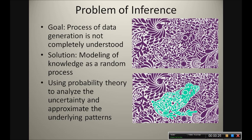Our problem of inference is related to analyzing or understanding usually large amounts of data, and in some cases small amounts of data. The goal is to understand the process of data generation — how any data set is generated. Usually, even though the data can be a deterministic process, the model can be very complicated and the number of parameters can be very large and become intractable. A common solution is to model the knowledge or the process as a stochastic process, a random process. Then, by using probability theory, it is possible to analyze the uncertainty in the data and approximate the underlying patterns.